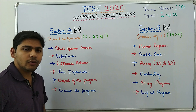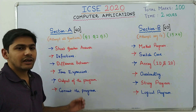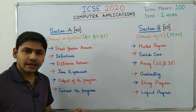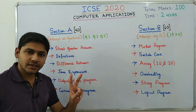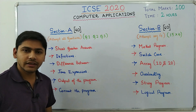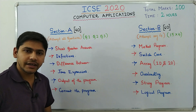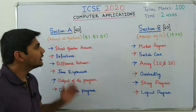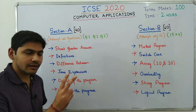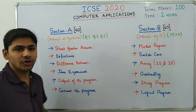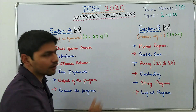Let's begin with the question paper pattern. ICSE computer applications. This paper is a 100 marks question paper. You will get 2 hours to solve the whole thing, and in addition to that, you will also get 15 minutes to read the question paper. The question paper is divided into 2 sections: Section A — 40 marks, theoretical type, and Section B — 60 marks, programs.